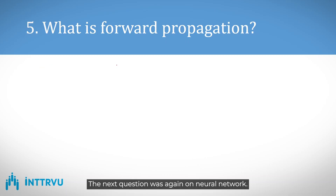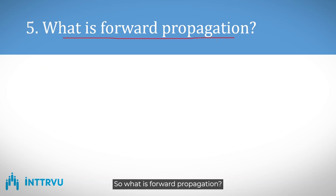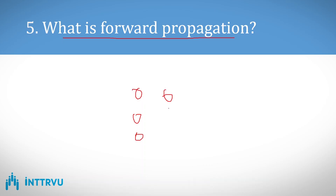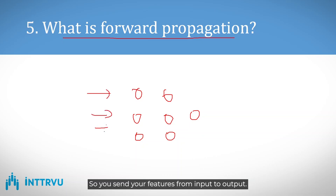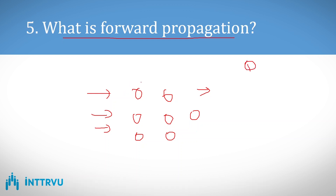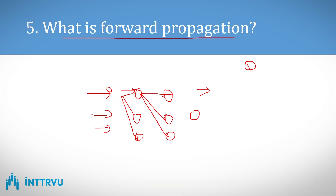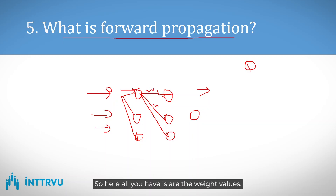The next question was on neural networks: what is forward propagation? Forward propagation is a step used during training of neural networks. You pass your features from input to output. Training a neural network has three steps: first is weight initialization, where the weights connecting features and neurons are randomly initialized.